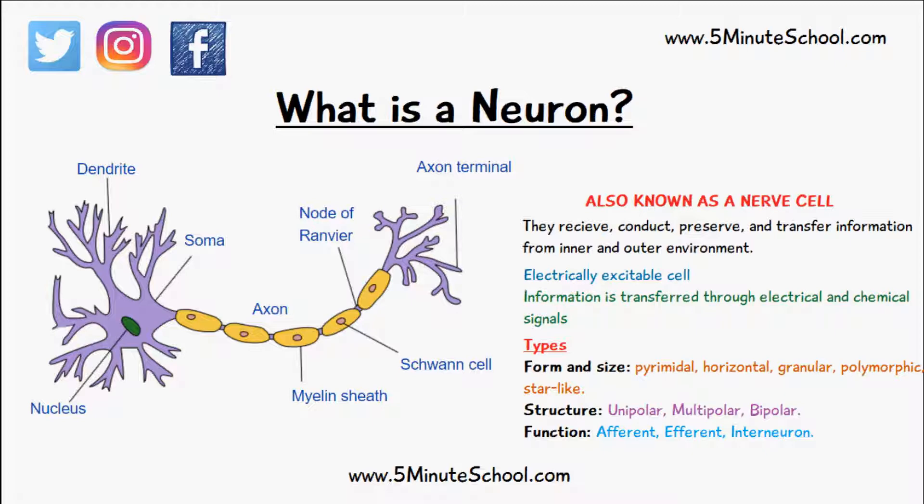This information comes from either inside the body or outside the body, and they're responsible for transferring this information to the brain and also from the brain to other parts of the body. They're actually electrically excitable cells and they transfer all this information through electrical signals and chemical signals.